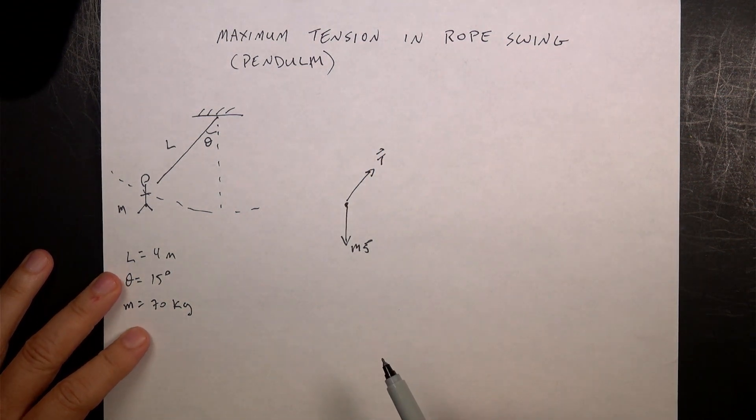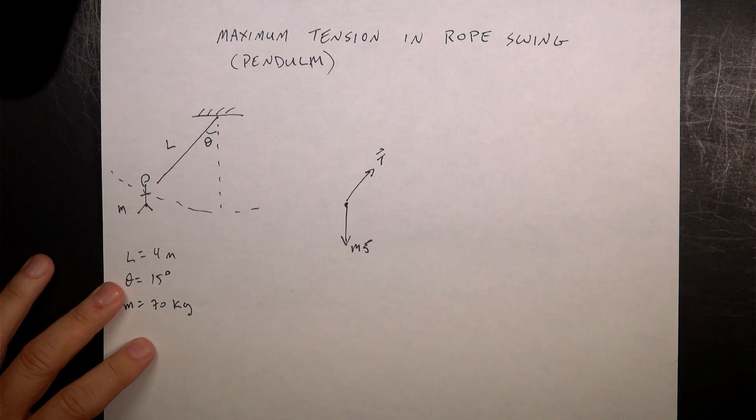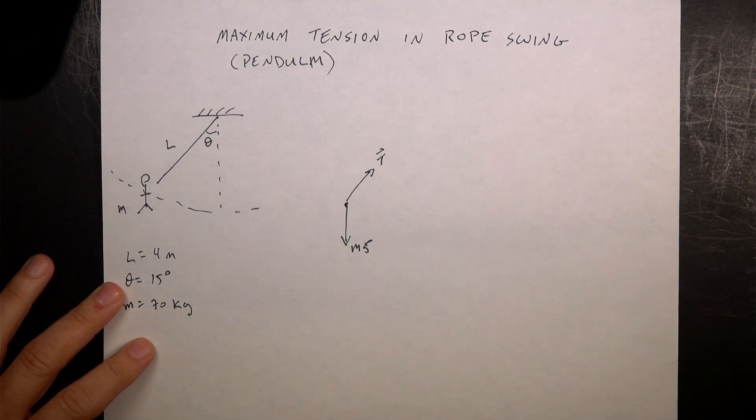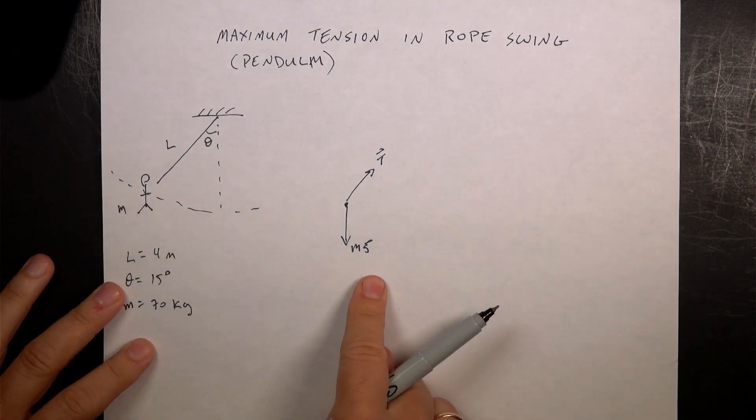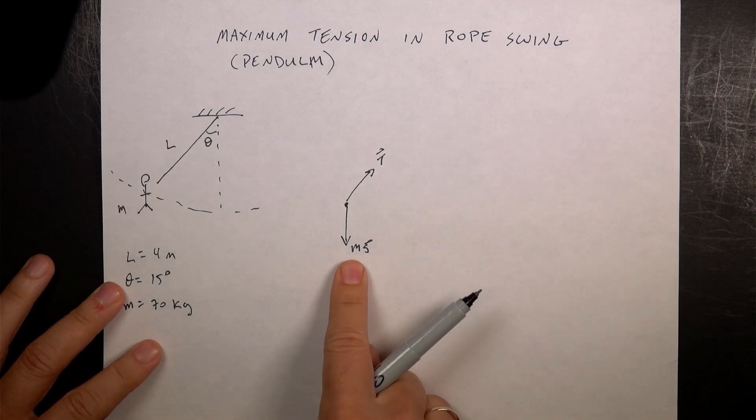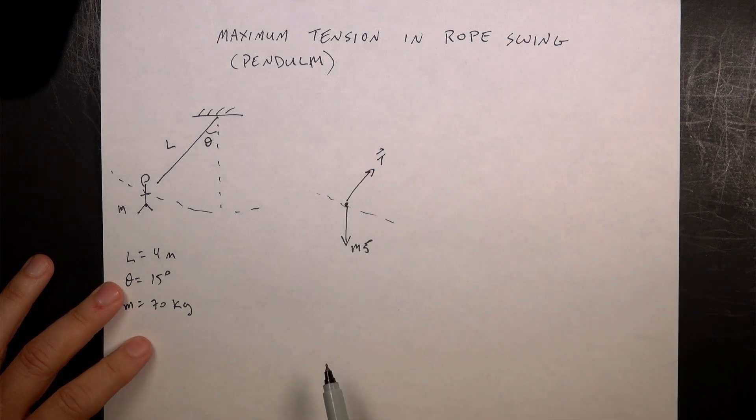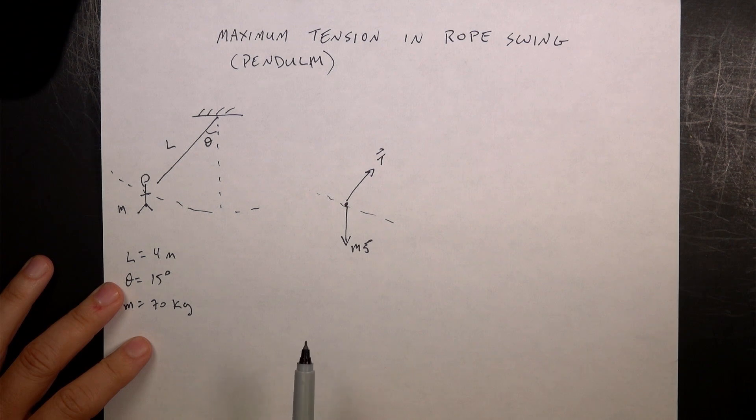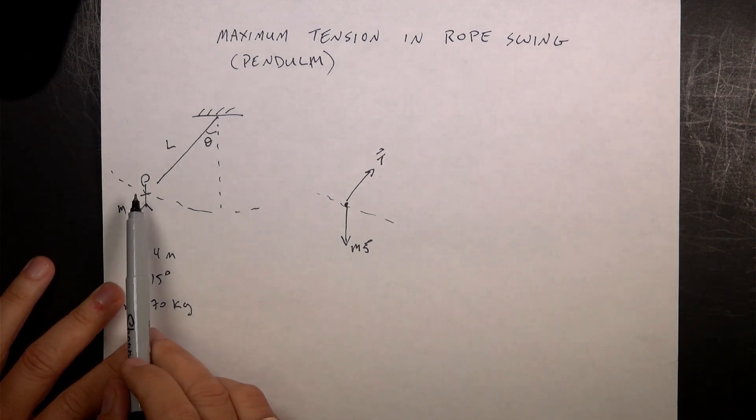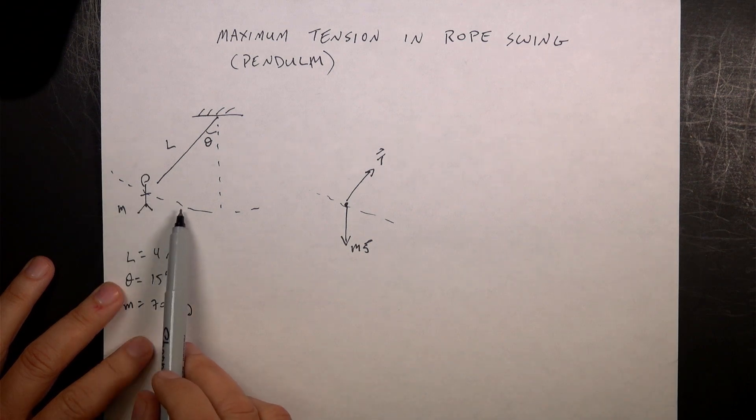And are those forces adding up to zero? And the answer is no, they cannot add up to zero. There's no way you can have two forces, the only two forces, nothing else is touching the person right when they let go. So there's no way those two forces can add up to zero because they're not in opposite directions. So there's nothing that's going to cancel the forces in this direction because there's a component of the gravitational force in that direction. And in fact, that force causes the person to move and accelerate that way. And so they start speeding up until they get down to the bottom part.